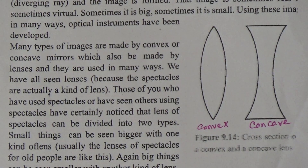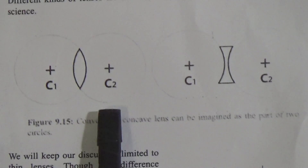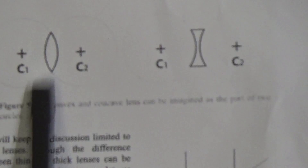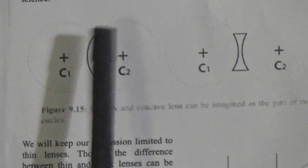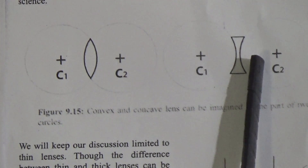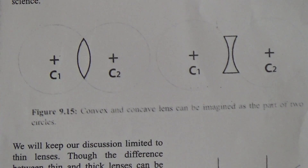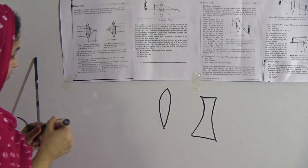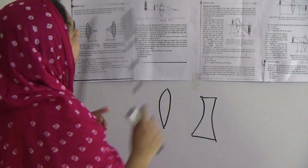Convex lens and concave lens can be imagined as part of two circles. This is two circles — this one is convex lens and this one is concave lens. Now come to the next topic.